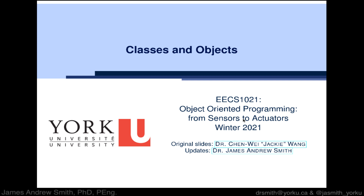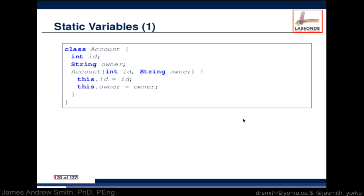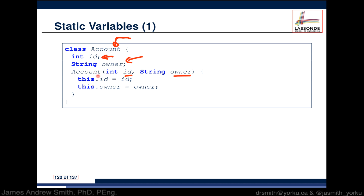Today we're going to be talking about static variables. Let's take a look at a particular class called Account. An account, like a bank account, has an ID number and the name of the owner. We have a constructor which says that when we're creating an account, we need an ID and the name of the owner, and we're going to create a local attribute for both ID and owner.